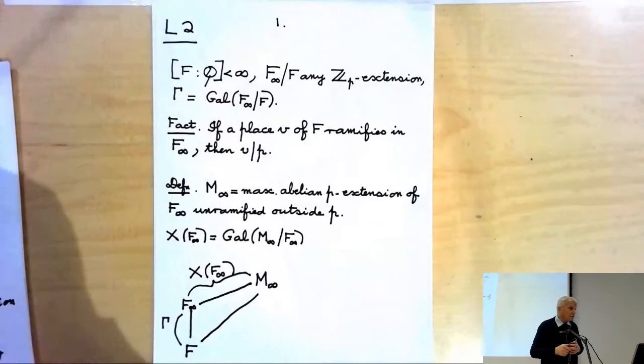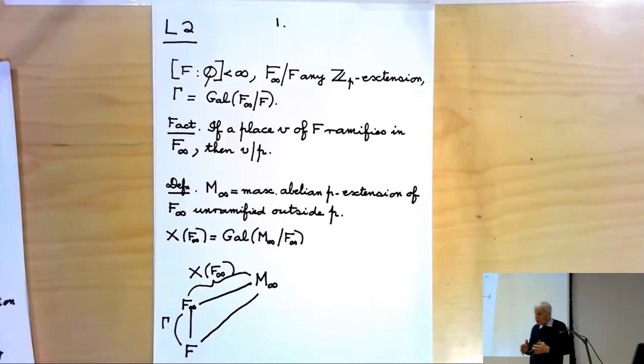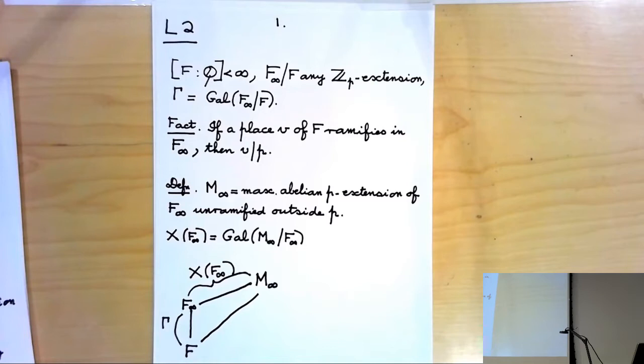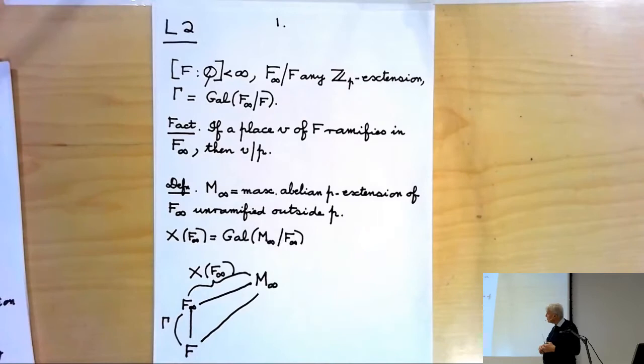Not all of them will necessarily ramify. At least one must, of course. And that even includes the infinite places. The reason for that is simply that global class field theory tells you that the inertia group of any prime which doesn't divide P must be a finite group in this abelian extension. And ZP has no closed finite subgroups. So that's why only ramification can occur at the primes dividing P.